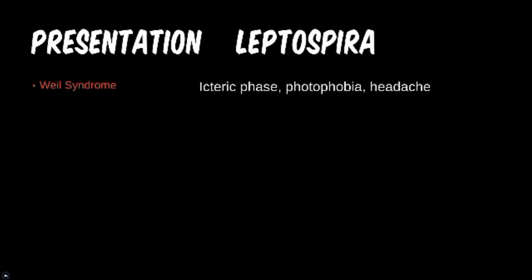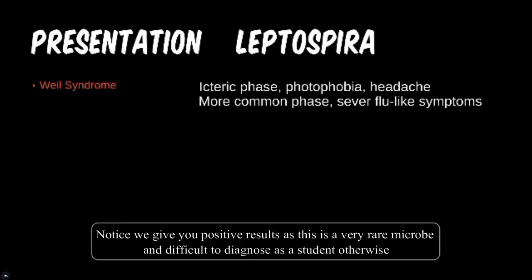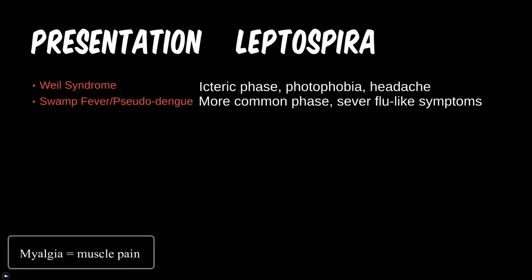Be wary of vague symptoms with a possible history of seizure. Any test question would need to give significant information to lead toward this diagnosis instead of other options, but in the clinic, lepto and other less common diseases can easily go undiagnosed. Our last patient presents with several weeks of flu-like symptoms and a history of recent travel. Serologies come back positive for Leptospira — what is the name of the more common presentation? Swamp fever or pseudodengue can present with severe myalgia lasting several weeks, with concern for meningitis or renal disease if untreated.